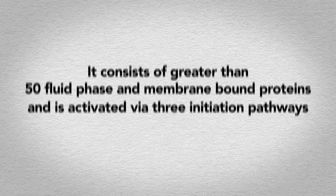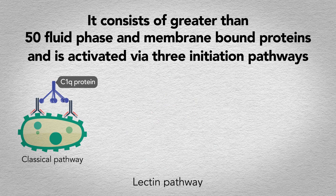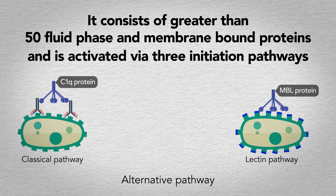The classical pathway recognizes antibody-antigen complexes. The lectin pathway recognizes carbohydrates commonly found on pathogens. And the alternative pathway recognizes molecular structures on target cells.